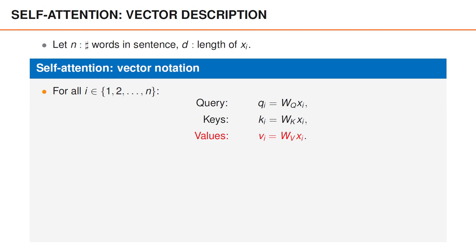The first thing we need to do is to compute query, key and value vectors for all the input words where the value vectors are one of the two things omitted in the previous video. Here wq, wk and wv contain three parameters that we can train.